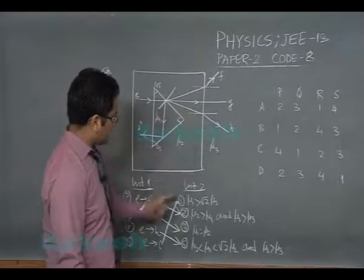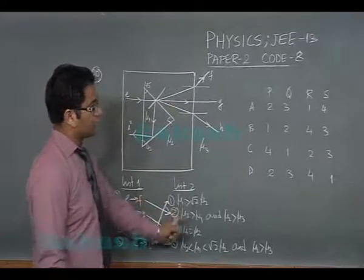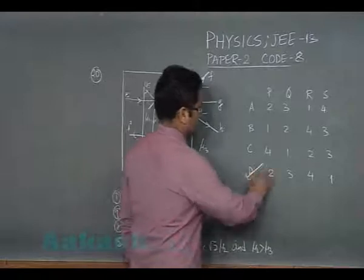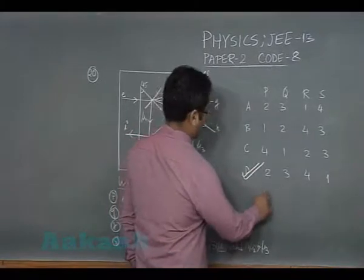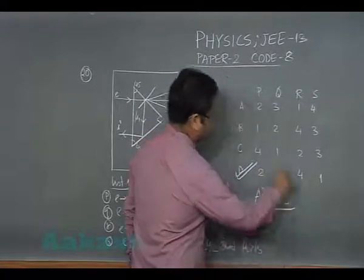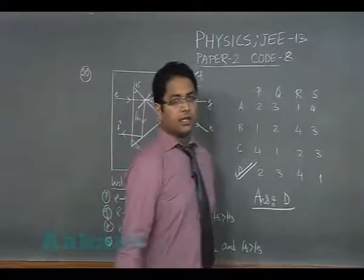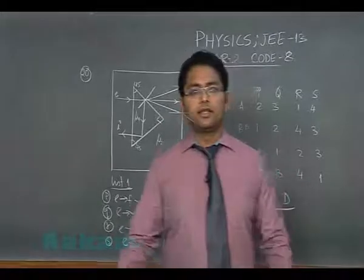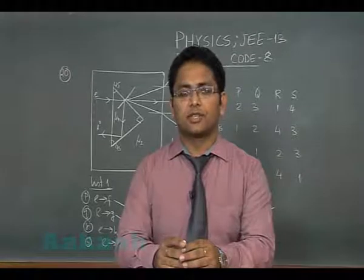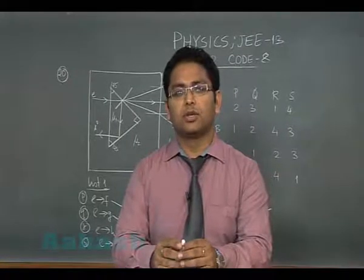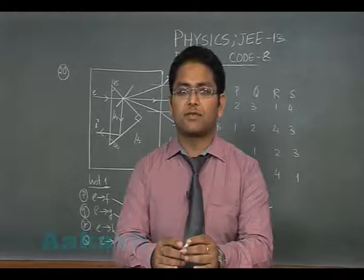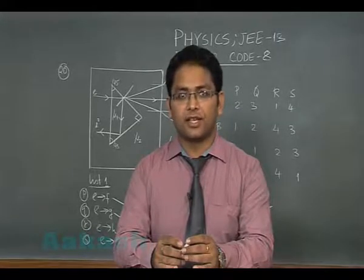So with all these things, you could see that P having option number 2, Q going with option number 3, R with 4, and S with 1 gives us option number D. So answer for question number 20 would be D. So students, this was the solution for Physics JEE Advanced 2013 Paper 2 Code 8. I wish you all the best for your examination. Thank you.